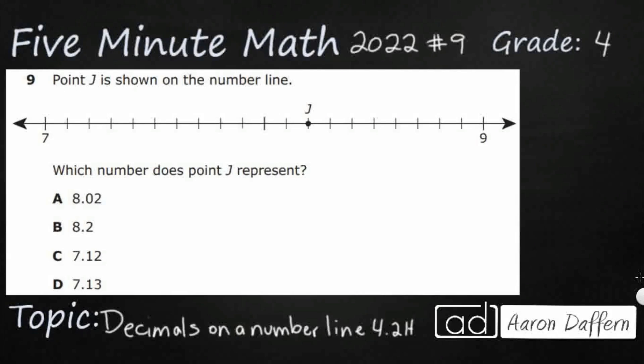Hello, and welcome to 5-Minute Math. Today we are looking at the fourth grade concept of decimals on a number line. This is standard 4.2h in the great state of Texas, and we are using item number 9 of the 2022 released STAAR test.